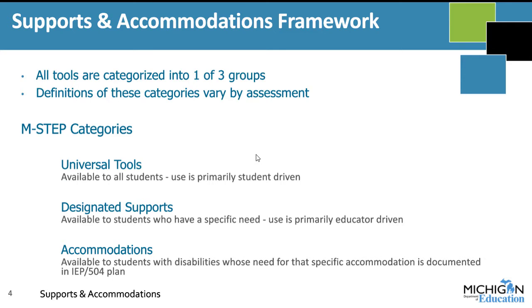The first category is universal tools. These are things that are going to be available to all students, and the use is primarily student-driven. A student can choose to use the tool whenever they would like. An example for an online M-STEP test would be the embedded highlighter tool. The embedded highlighter tool is always on, always available to students, and is a tool a student can use whenever they'd like — totally dependent on them to use it during the test.